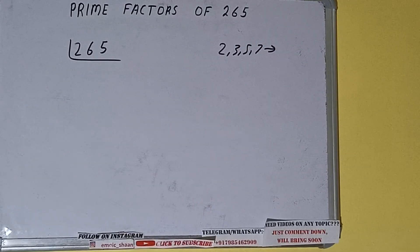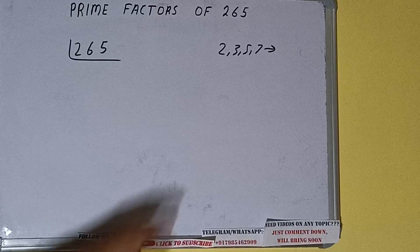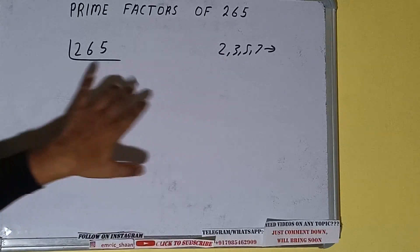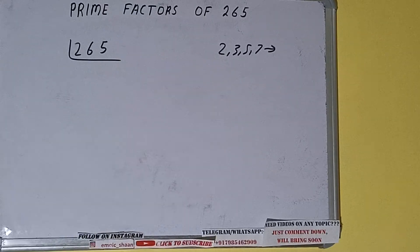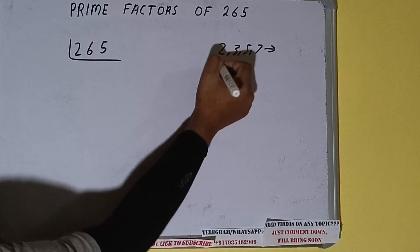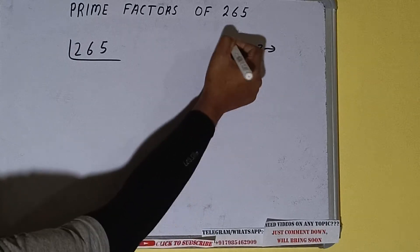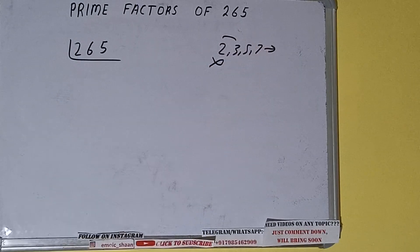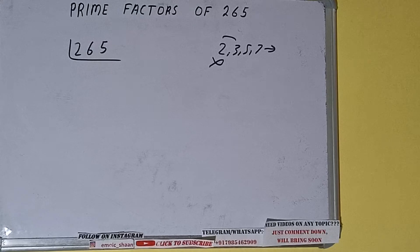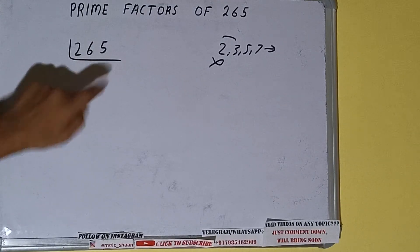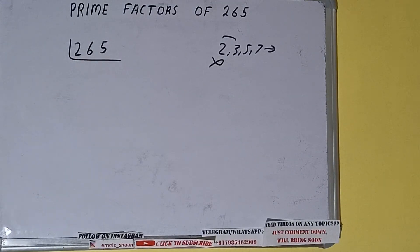We'll be checking with the lowest prime number we have, that is 2. Is the number 265 divisible by 2? Clearly not, because the number is odd. So we'll go to the next lowest prime number, that is 3. Is 265 divisible by 3? We need to check — no, it is not divisible by 3 as well.